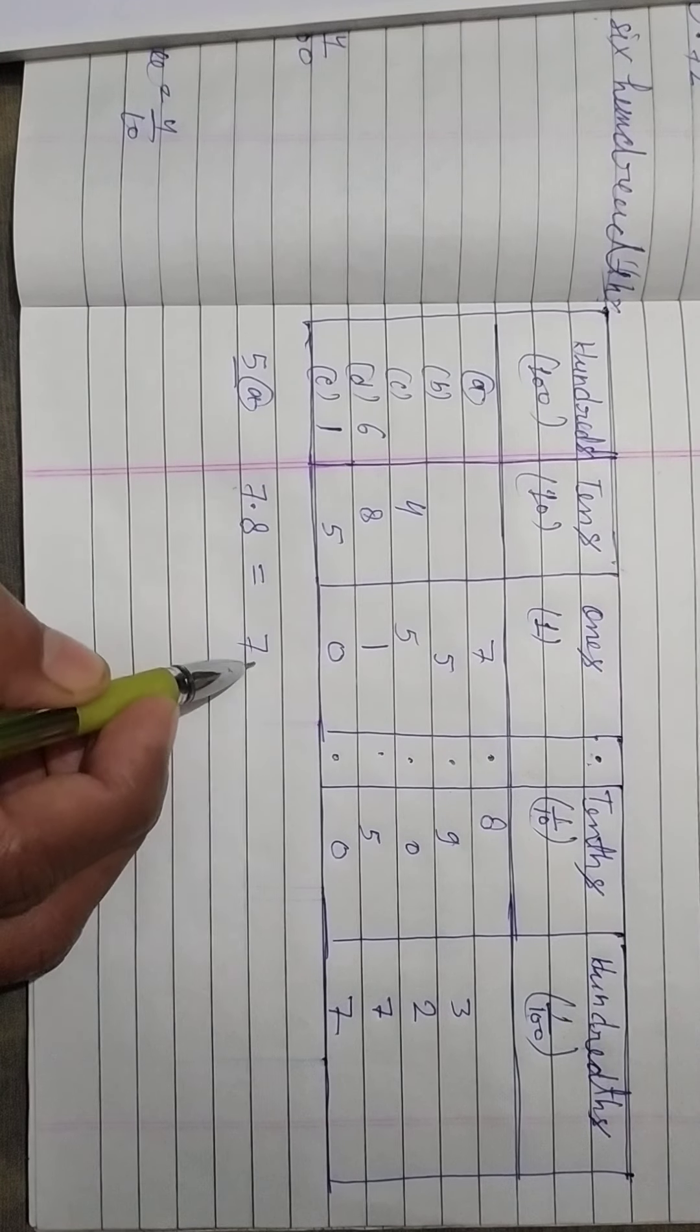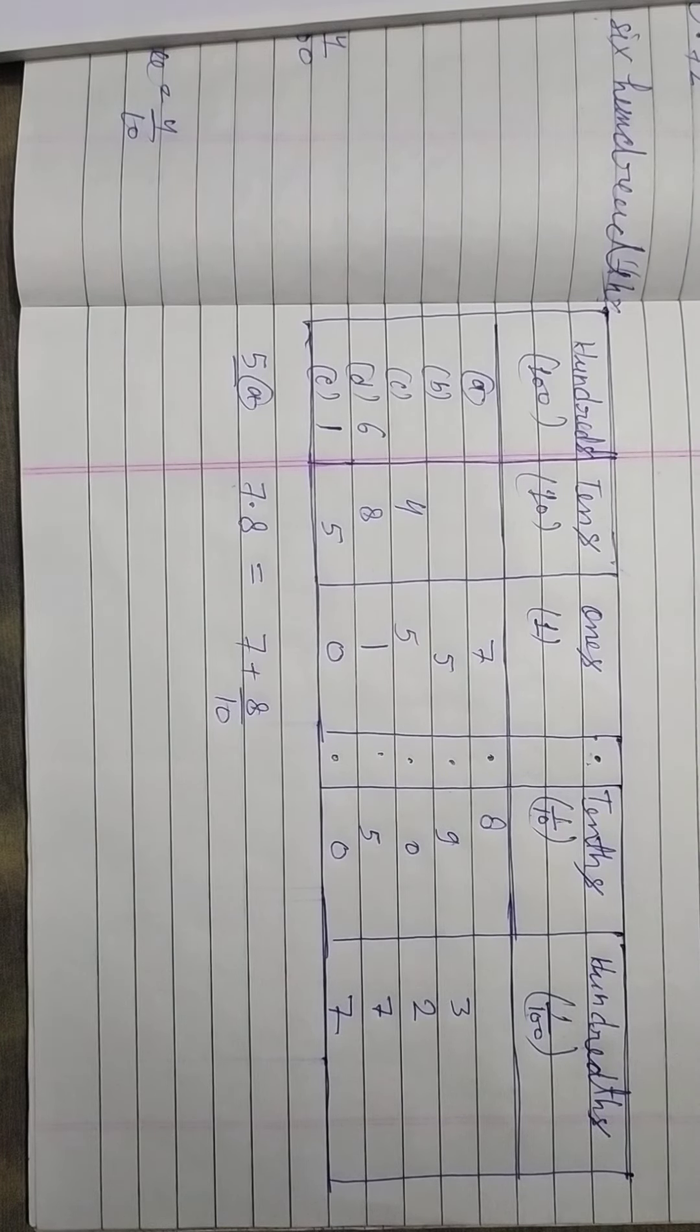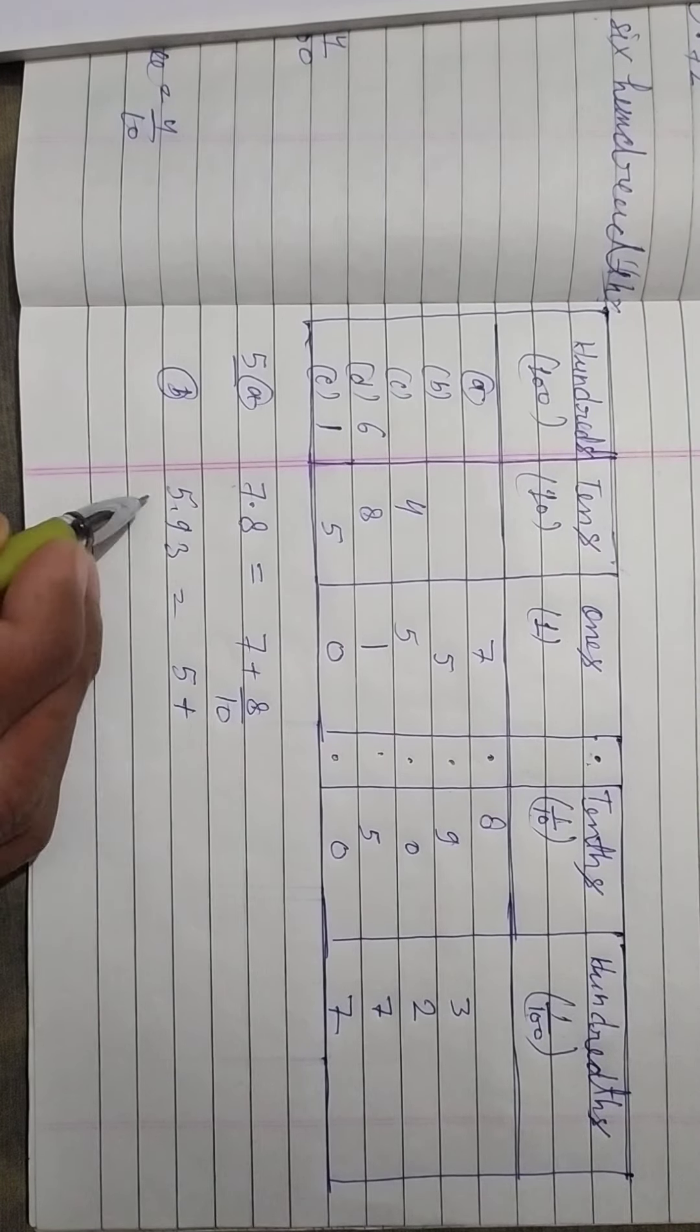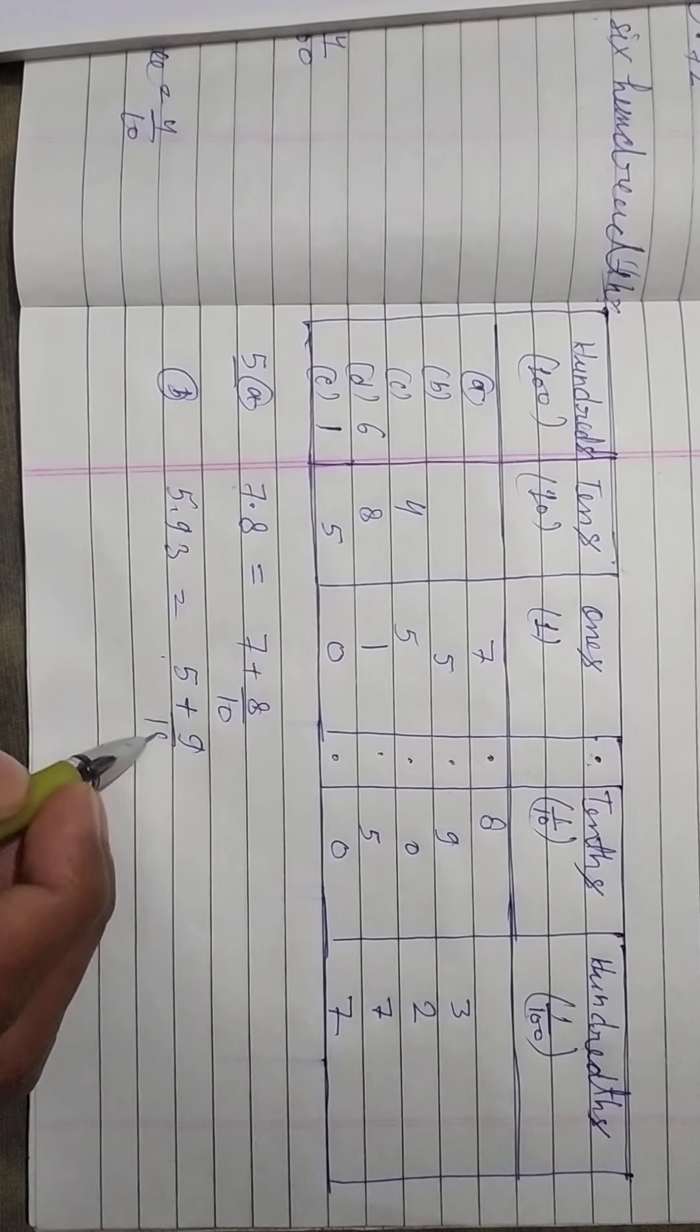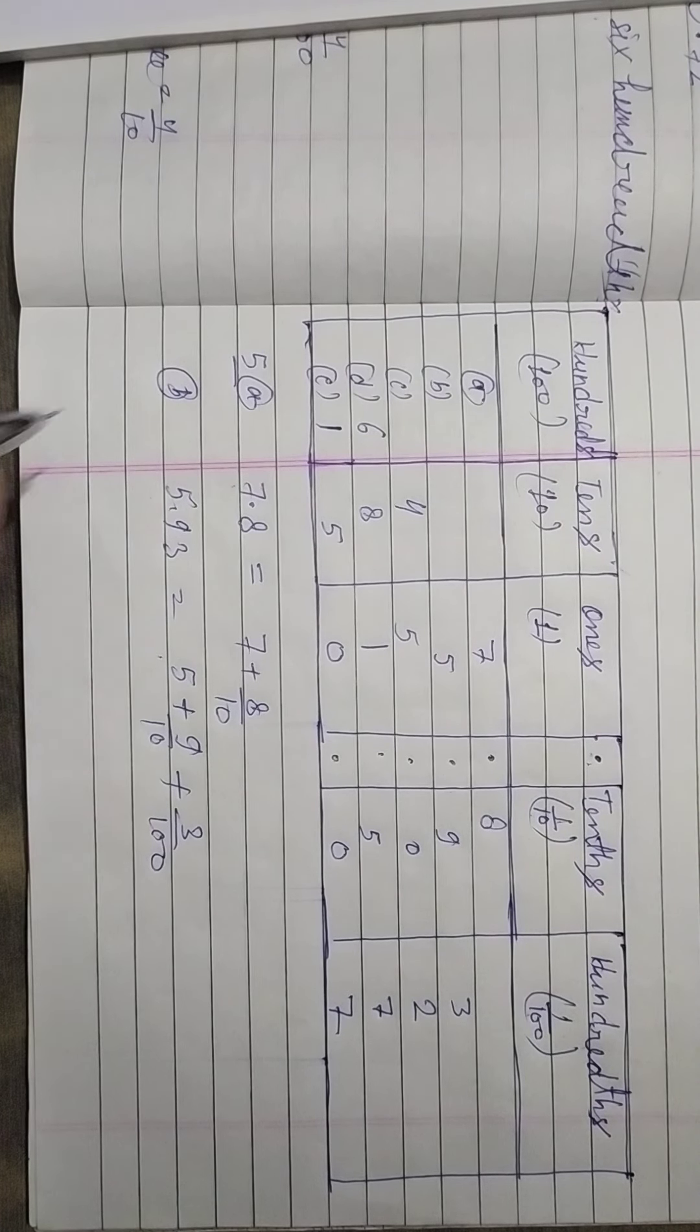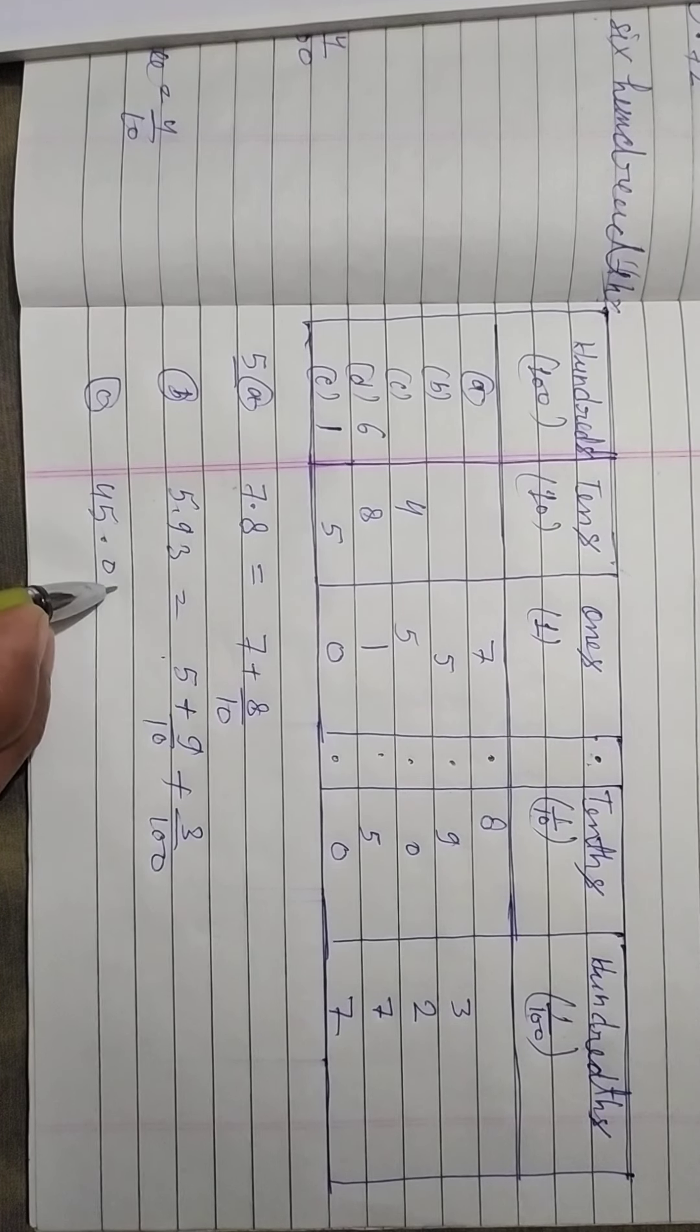So here is 7, then plus 8 upon 10 because it is 8 10th. Then we have to give it, so here we have to give it 5.93. So here we have to give it 5, plus 9 10th place so 9 upon 10, plus 3 which is 100th place so 3 upon 100.